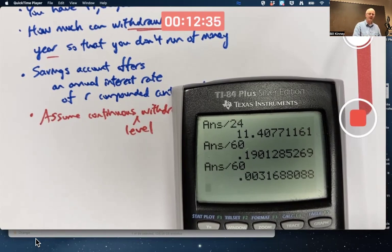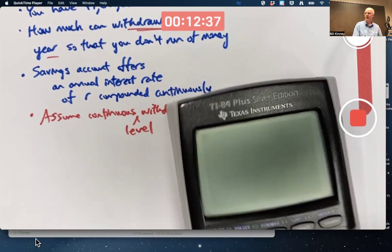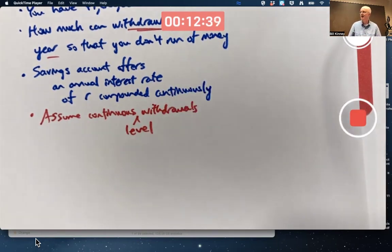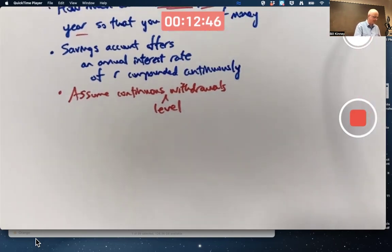But I hope that seems like that's probably too much to withdraw. You're probably going to withdraw at a rate less than $100,000 a year. How could we figure out what's the best rate to withdraw that? We need a differential equation.